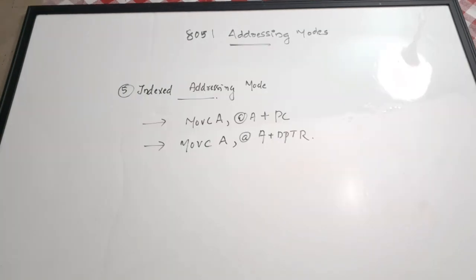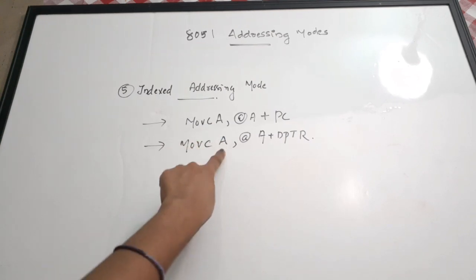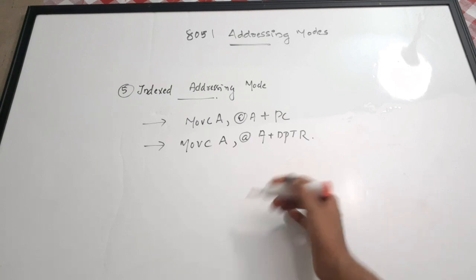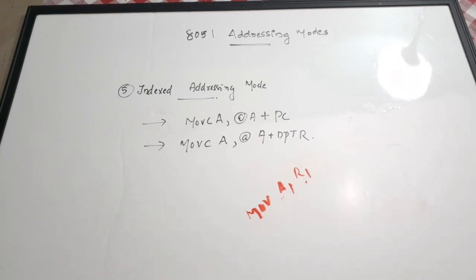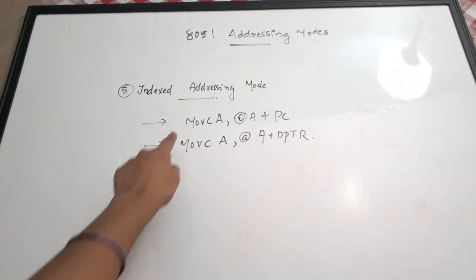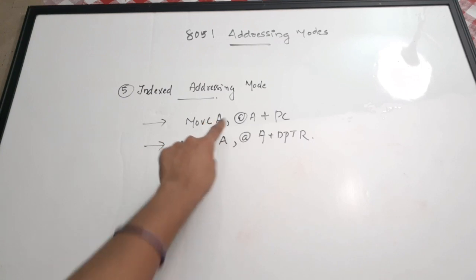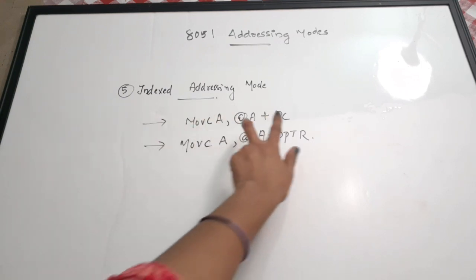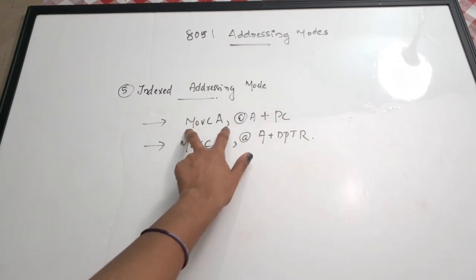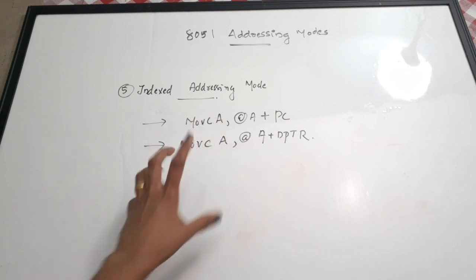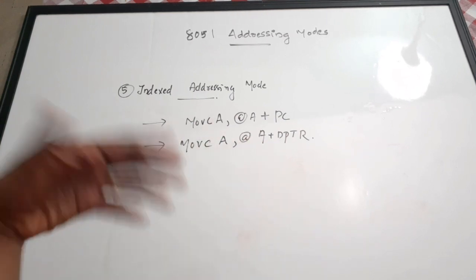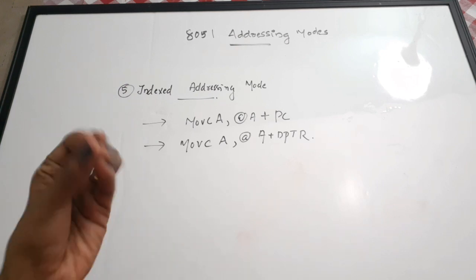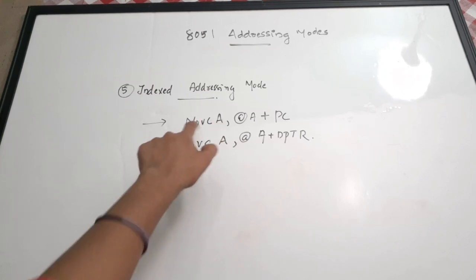The last addressing mode is indexed addressing mode. Two things to note: first, the destination is always the accumulator register. Consider MOV A, R1 — here A is the destination and R1 is the source. For indexed addressing mode, the destination is always the accumulator. Second, the source memory can only be accessed from program memory, which is why we use MOVC (move code) rather than just MOV — it is a program memory access.